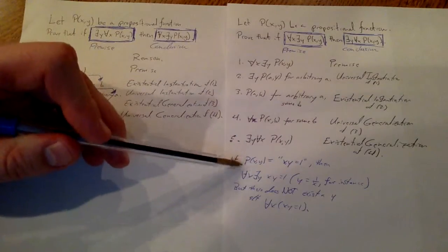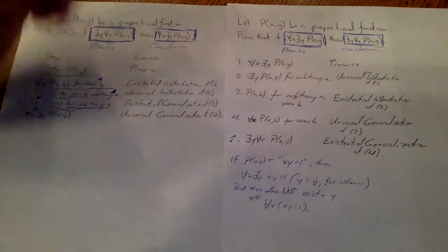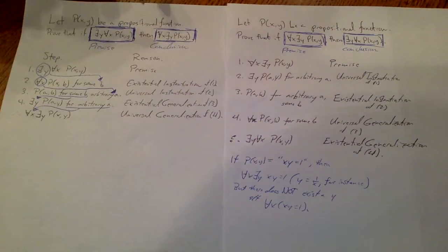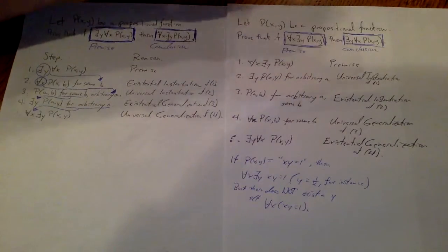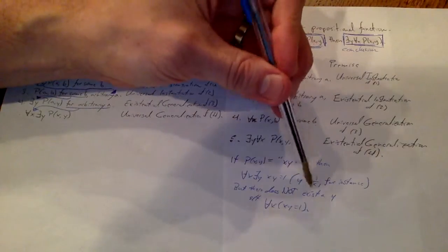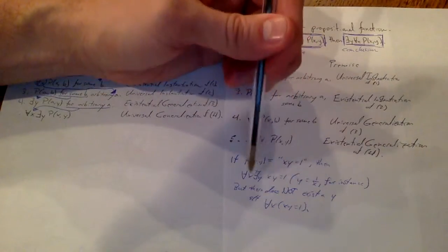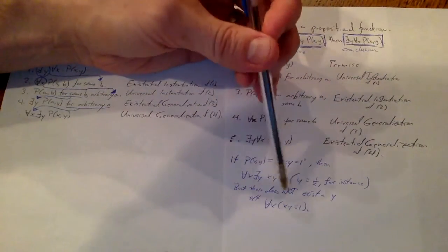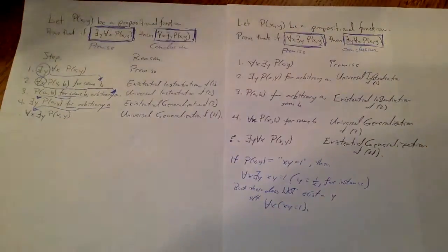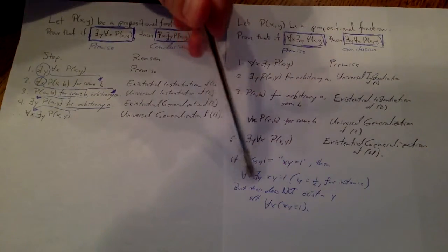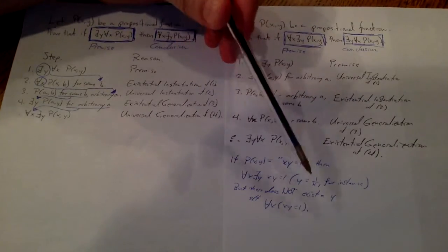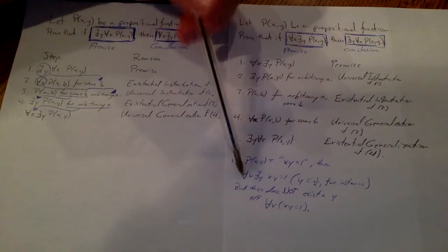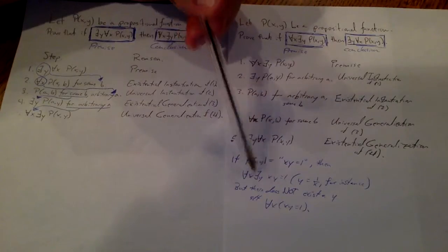It's false because if I use a propositional statement like P(x,y) meaning x times y equals 1, where the universe for x and y is real numbers, then for all x, yes, there does exist a y such that x times y equals 1. I'm thinking non-zero real numbers, so y being 1/x will give me x times y equals 1. But there does not exist a single y such that for all x, x times y equals 1. So essentially when I select my 'for all x', the choice of y is dependent on x, and so I can't reverse these things. For all x there exists a y, but that y is particular to x.